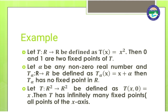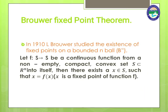Now, the history of fixed point theory. In 1910, L. Brouwer studied the existence of fixed points on a bounded n-ball. The theorem states: let f from S to S be a continuous function from a non-empty compact convex set S, a subset of ℝⁿ, into itself. Then there exists an x belonging to S such that x = f(x), i.e., x is a fixed point of f.